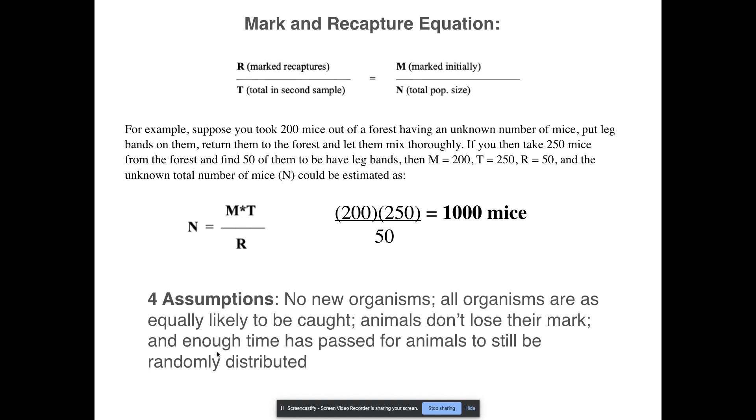Another one is that you have to wait for enough time to pass so that these organisms can distribute themselves randomly again. So you don't want to go back within an hour or even a day. You want to make sure that you give enough time for these mice to go wherever they would want to go and settle in a different location so that they are as equally likely to be caught as a mouse without a band. And if those things happen, then you can use this method to estimate the size of the population.